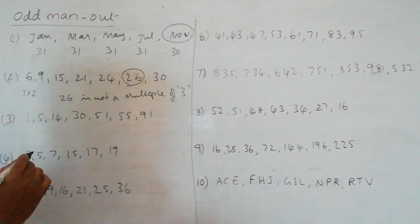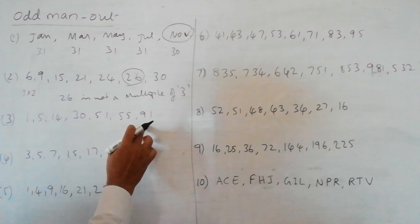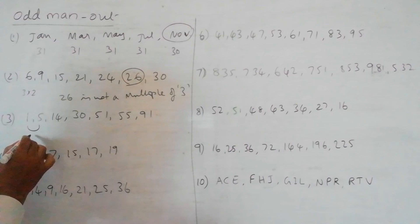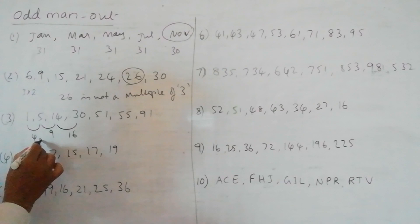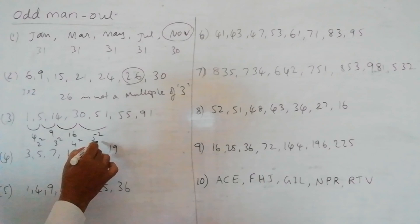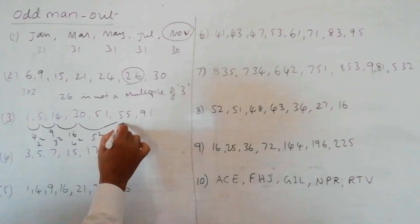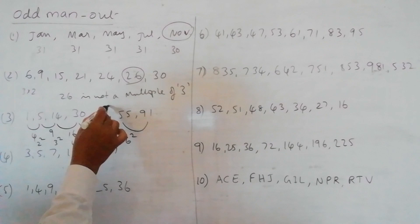And coming to the next problem we have 1, 5, 14, 30, 51, 55, 91. So here if you observe the successive differences, here it is 4, this is 9 and this is 16. So this is 2 square, 3 square, 4 square. So next difference should be 5 square which is 25, 30 plus 25 is 55. And the next difference is 6 square which is 36, 55 plus 36 is 91. So the odd man is 51.